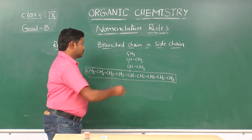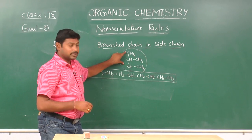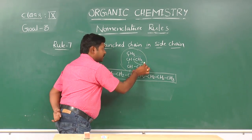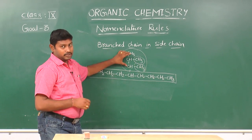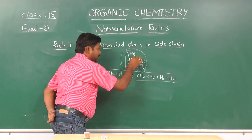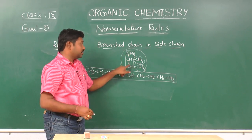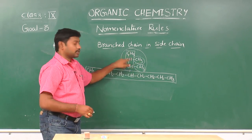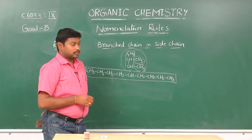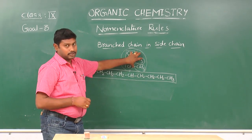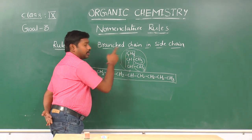This is called a substituent. In this substituent, it is itself branched again with 2 methyl groups. This is a complex substituent because on this side chain, 2 methyl groups are again substituted. How do we write the IUPAC name of this compound? We should give numbering to the side chain as well.